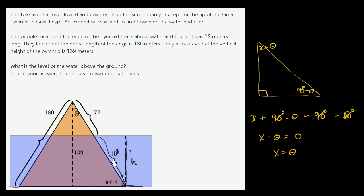So what does this do for us? We need to figure out this height. We know that this right over here is a right triangle. This thing in yellow right over here is a right triangle.